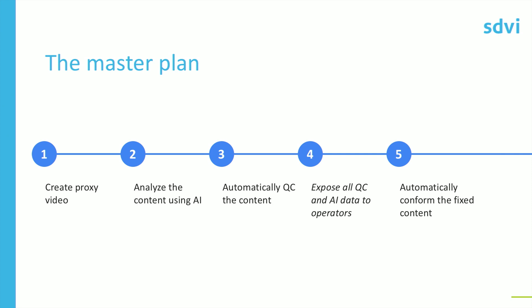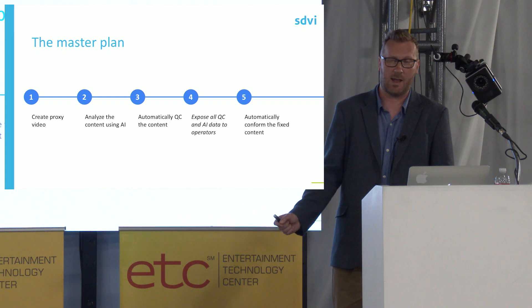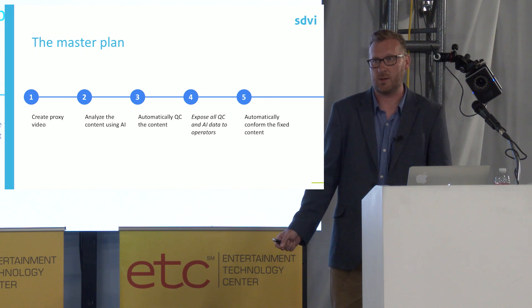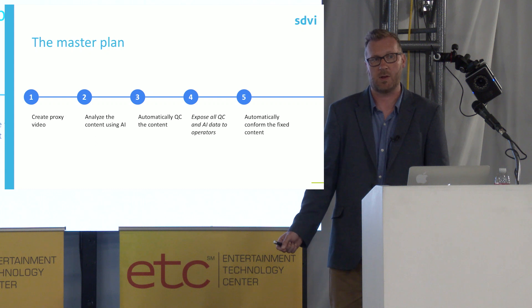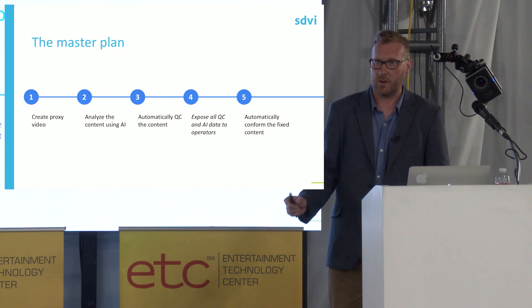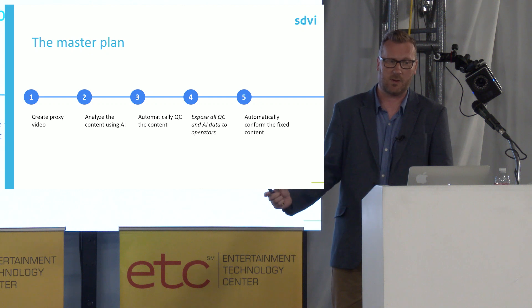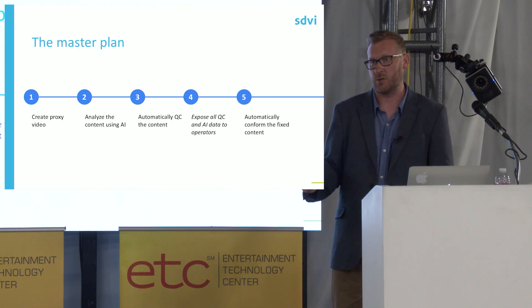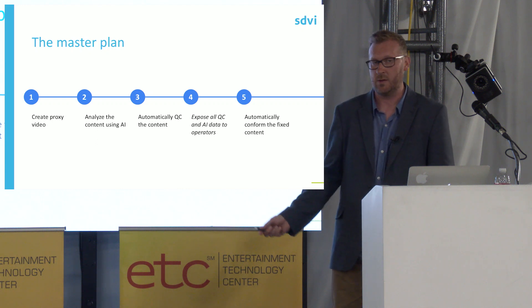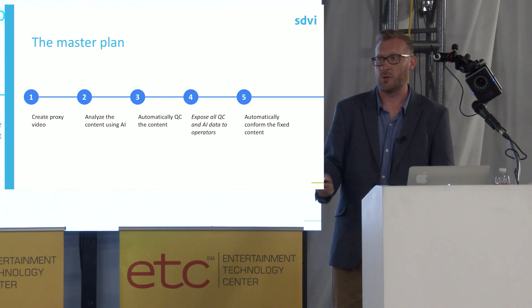We sat down and hatched a plan to address this. The first step was to create a proxy of the video — moving big master videos around doesn't make sense. If you can get what you need from a lower resolution version, you should do that. Next, we would analyze the content in that proxy using AI services, then automatically QC the content using content QC tools — looking for technical compliance, things like too many black frames or audio out of range. We would then gather all of that QC data and AI data and make it available to operators so they can make decisions in a guided way, rather than playing the content all the way through. Finally, once they've made those decisions, conform those decisions back to the high-res media to create a new version.